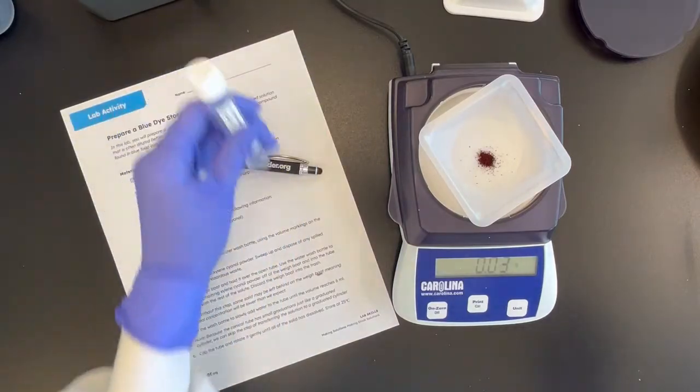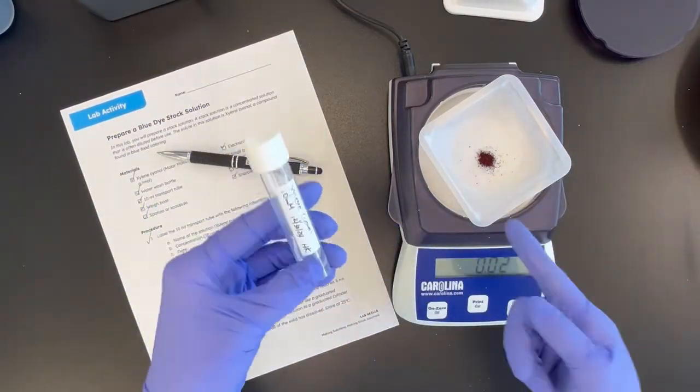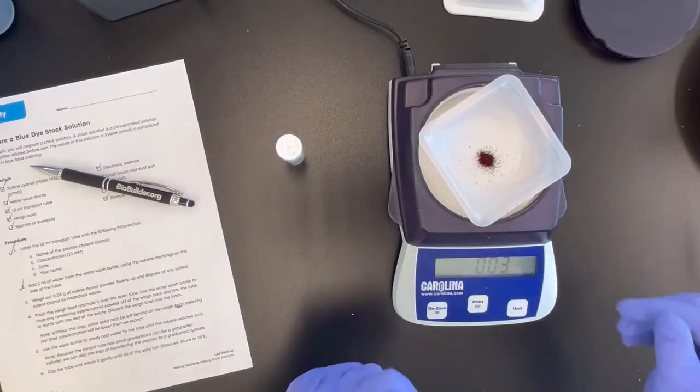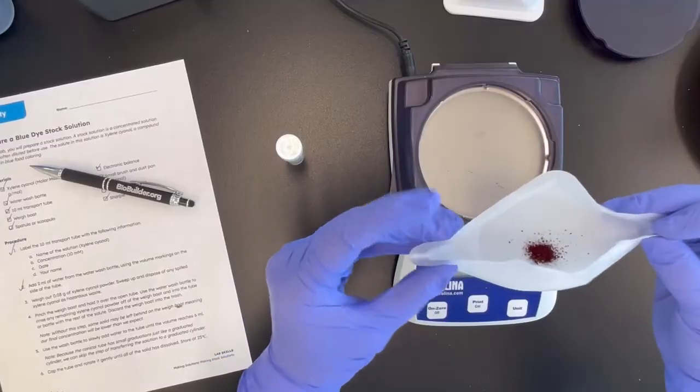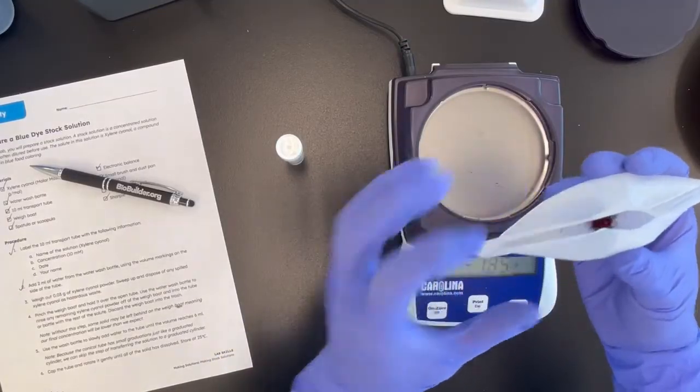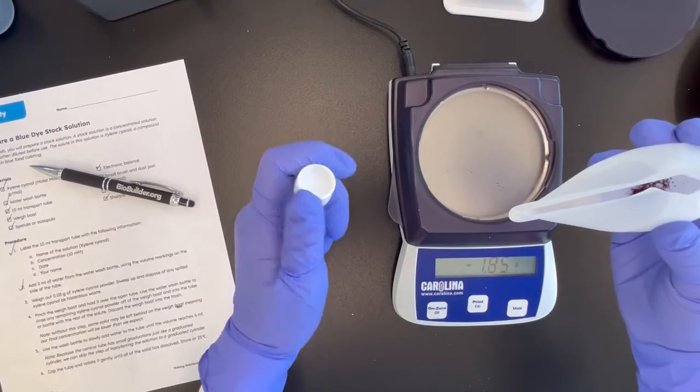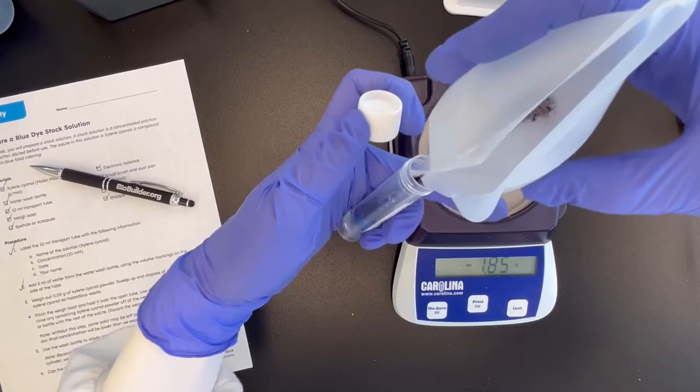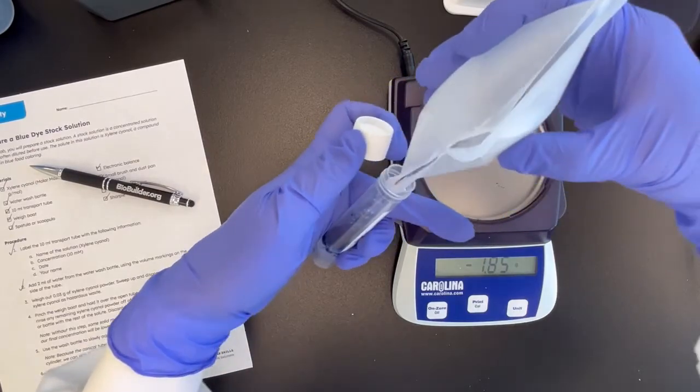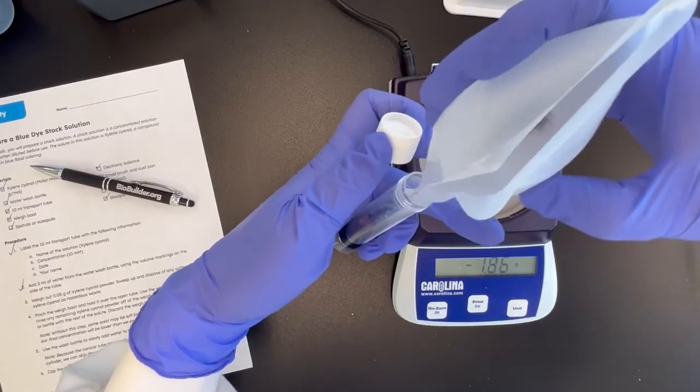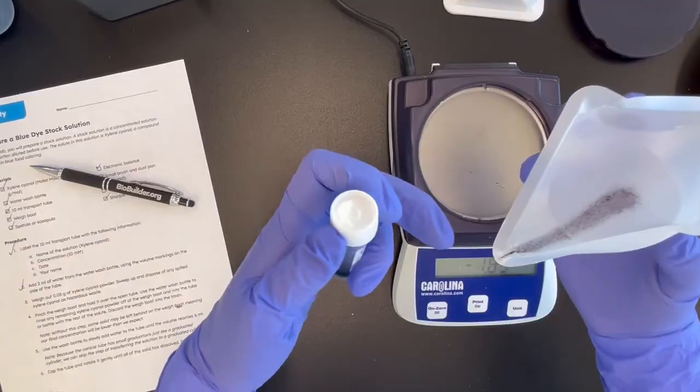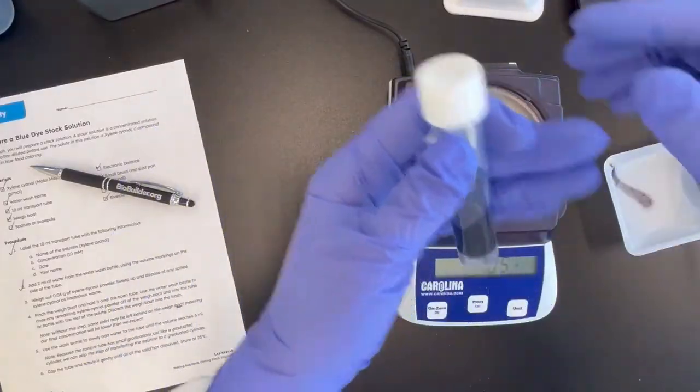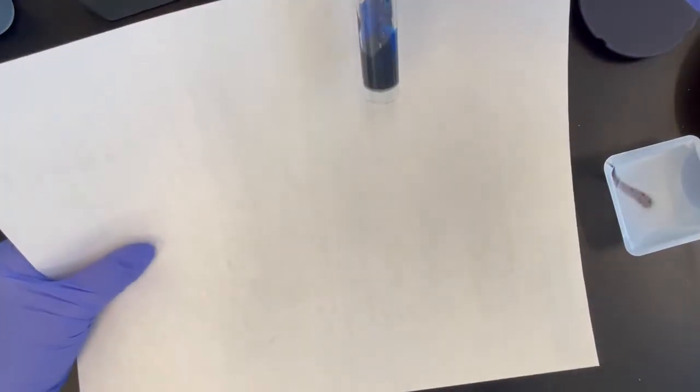So now what you want the students to do is to transfer the powder into this tube that has two milliliters of water. And to help assist doing that, these weigh boats can be bent in diagonal like this. And so this could be used as a spout to drop the powder in. So here we go. And you can have the students just kind of gently tap to make sure you get all the powder as much as they can. And they can close the cap for now. And you can see that it's immediately turning blue.